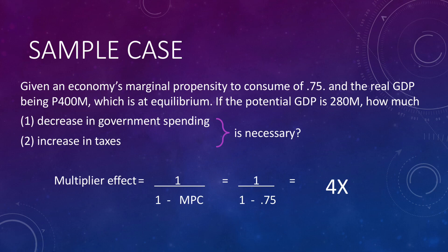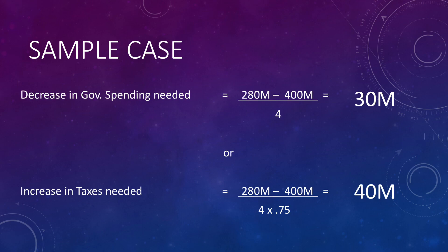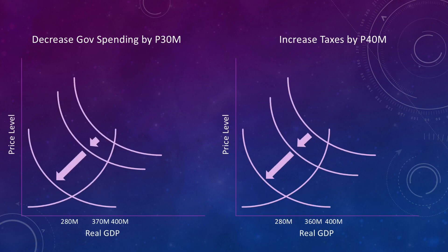For the decrease in government spending needed, we take the necessary decrease in GDP: 280 million minus 400 million. Dividing by the multiplier of 4 gives us 30 million as the required initial decrease in government spending. Or, there should be an increase in taxes, calculated as (280 million minus 400 million) divided by (4 times 0.75), leading to a necessary increase in taxes of 40 million. In summary, the government must decrease spending by 30 million or increase taxes by 40 million.